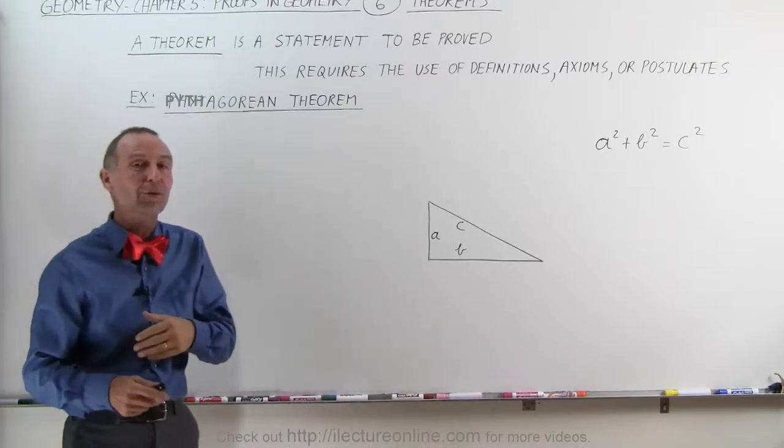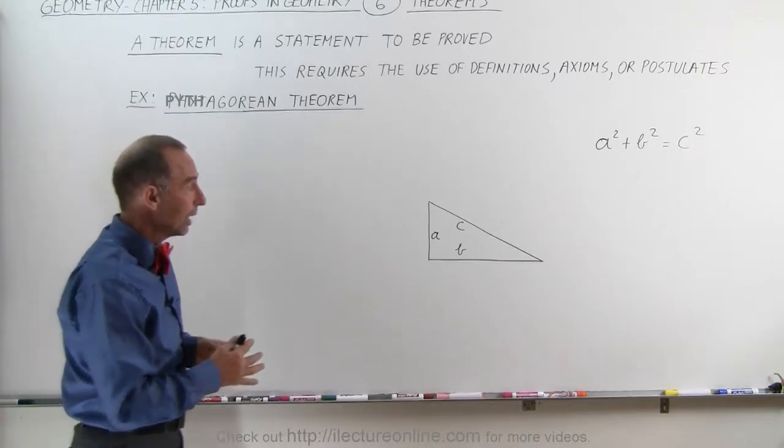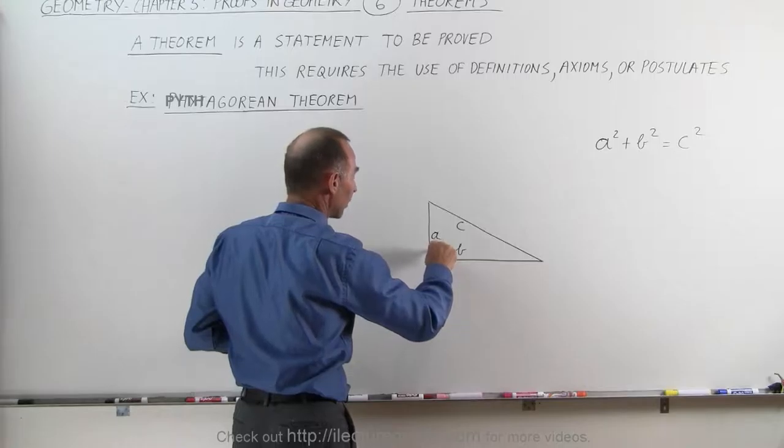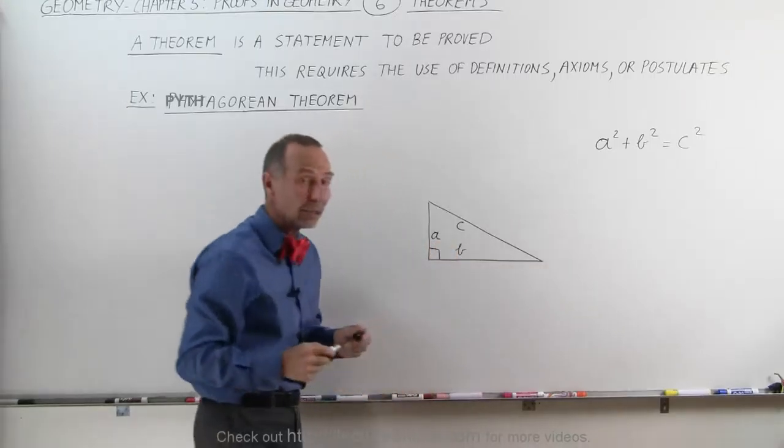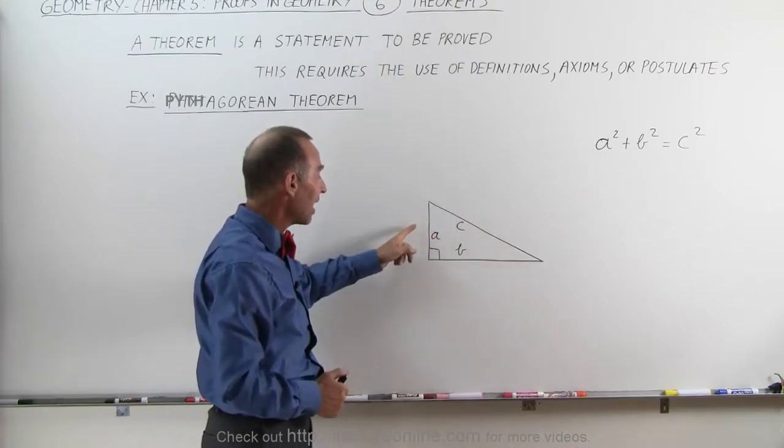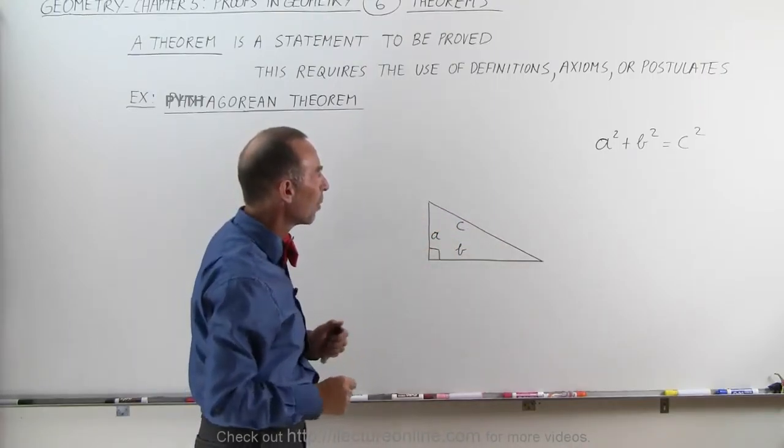This is probably one of the most well-known theorems in mathematics. If we have a right triangle, meaning one of the angles is a right angle or a 90-degree angle, we have the three sides A, B, and C. I wrote them on the inside for a reason you'll see in just a moment.